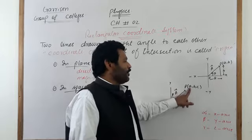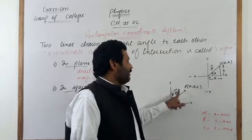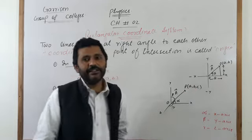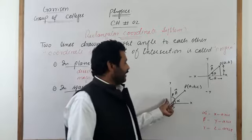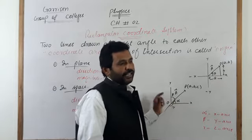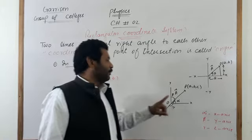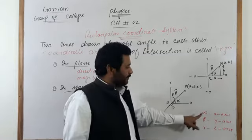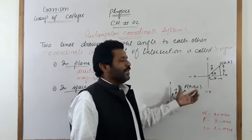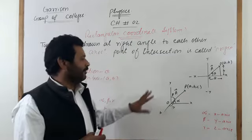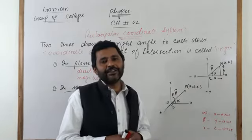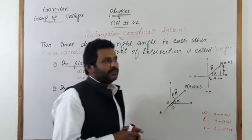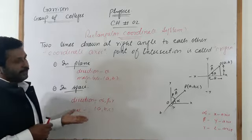Here, a is the distance of vector A from the origin along the x-axis, b is the distance along the y-axis, and c is the distance along the z-axis. Alpha, beta, and gamma describe the direction of vector A in space with the x, y, and z axes respectively. With coordinates (a, b, c) and angles (alpha, beta, gamma), we can fully describe vector A in three-dimensional space with both magnitude and direction.